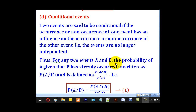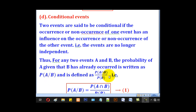Therefore, for any events A and B, the probability of A given B is written as P(A|B). This is pronounced as A given B, where the slash means 'given.' It is defined as the probability of A intersection B divided by the probability of B.